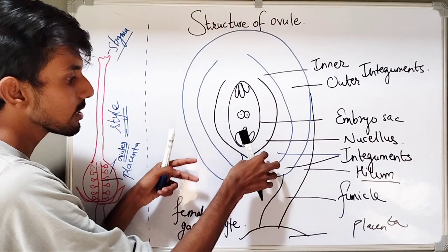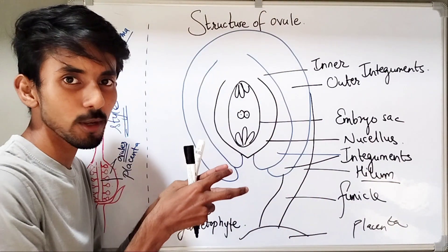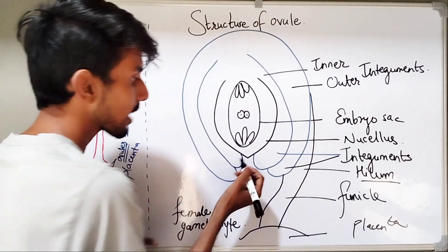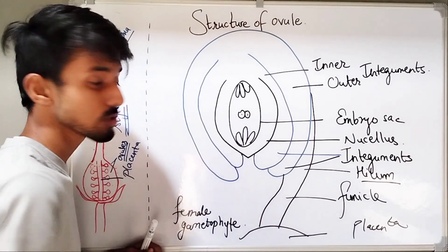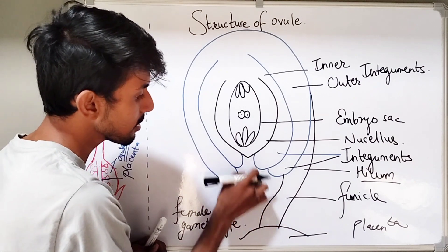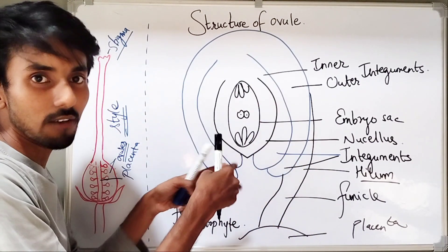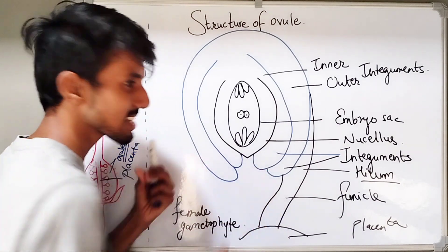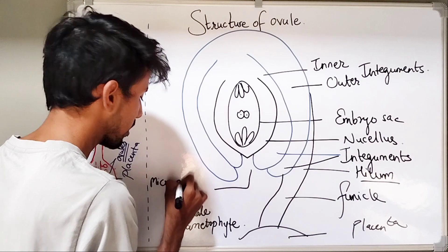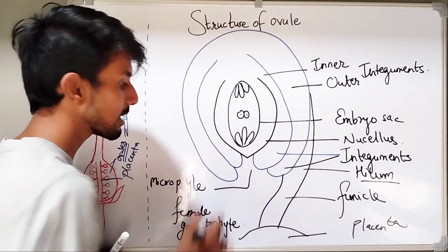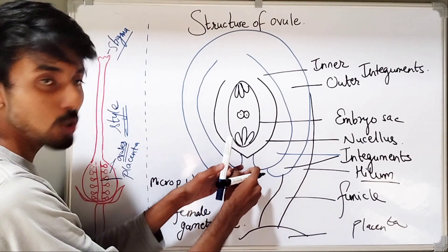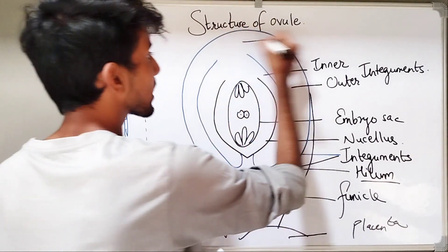As you can see, the two integuments are protecting the embryo sac — they are covering the nucellus and the embryo sac. But they are not covering the embryo sac and the nucellus completely. You can see this particular region — this is the region where the integuments do not cover. So, this acts as an opening. This opening is called as the micropyle. Micropyle will be the region from where the pollen tube is going to enter. And the pole opposite to the micropyle — this side is called as the chalaza.